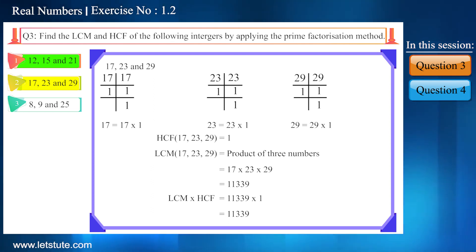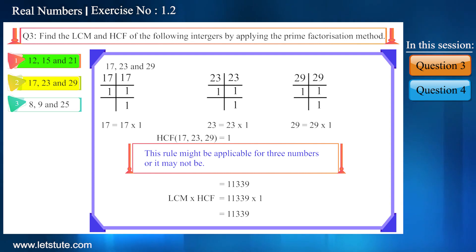As here in this question the product of these three numbers is equal to the product of its LCM and HCF, thus from this we can conclude that this rule might be applicable for three numbers or it may not be.